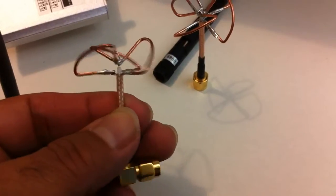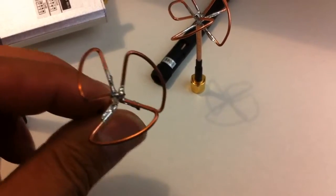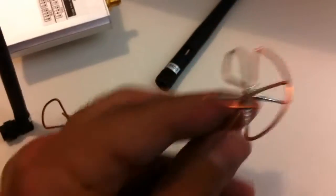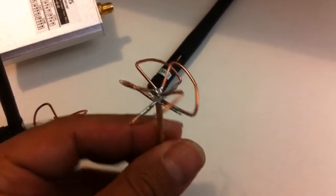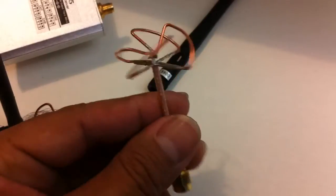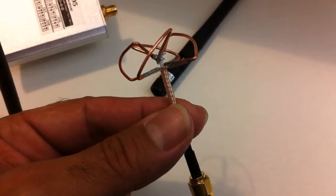So that's the cloverleaf, three clovers, and we have the skew planar. Same sort of thing exactly except we have four clovers. So that's for your receiver.